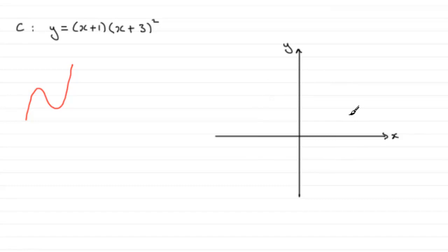Now, we need to find out where it's going to cross the y-axis. And any graph crosses the y-axis when x is 0. So when x is 0, you can see that y will equal 0 plus 1, which is simply 1, being multiplied by 0 plus 3, which is 3, 3 squared. And so we end up with 9. So the graph's going to cross at a point 9. Let's just say that's the point 9.